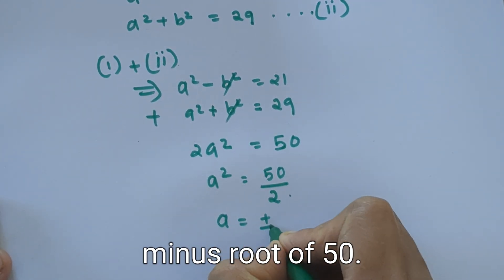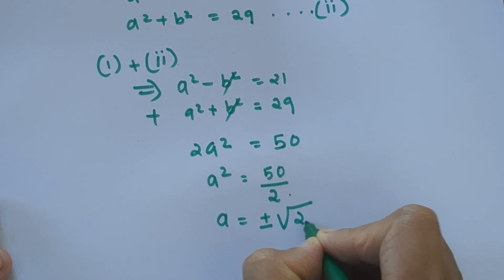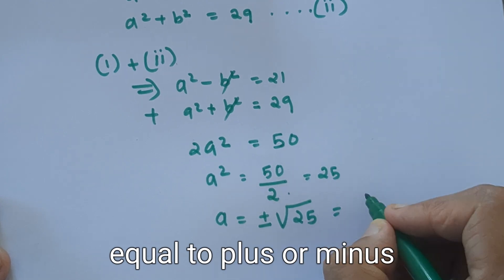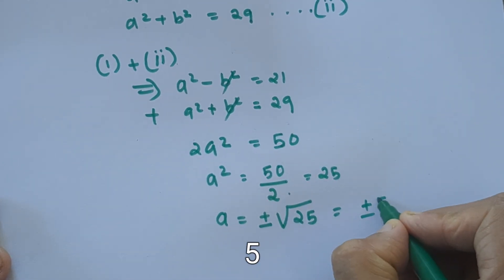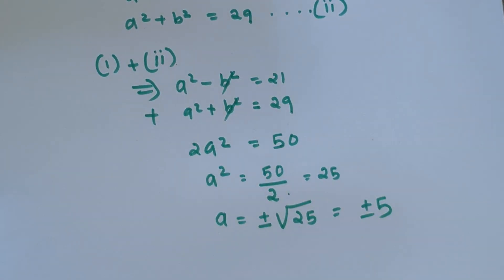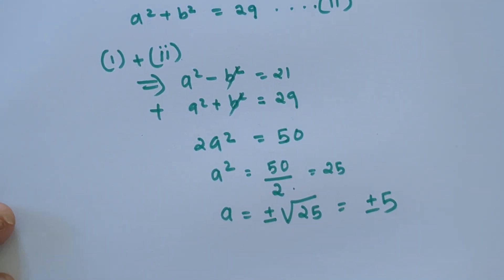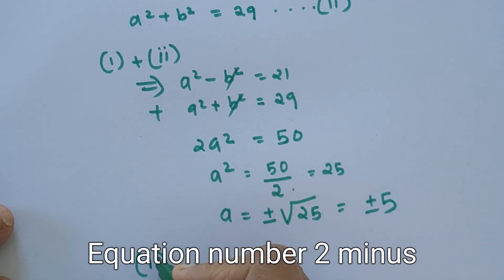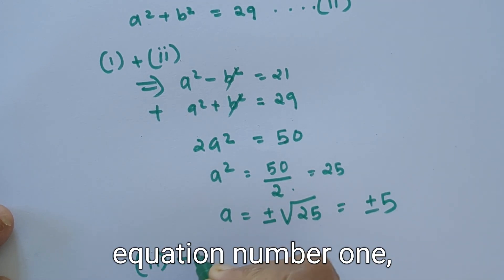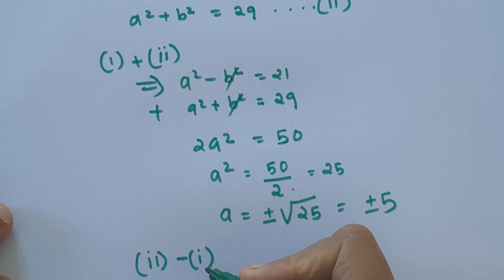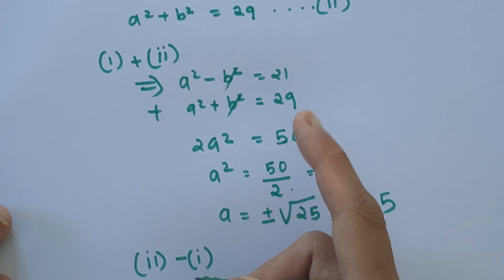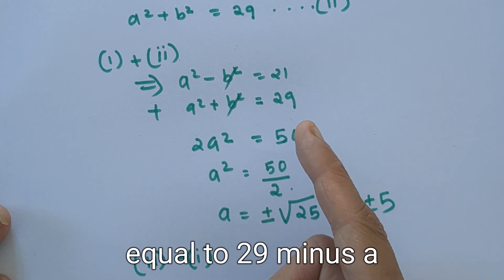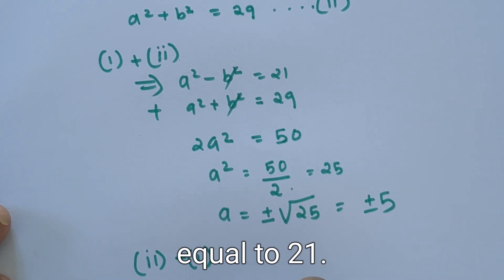So a squared equals 50 divided by 2, which equals 25. Therefore a equals plus or minus the square root of 25, which is plus or minus 5. Next we have to find b, so we subtract equation 1 from equation 2: a squared plus b squared equals 29, minus a squared minus b squared equals 21.